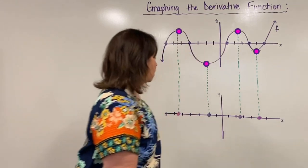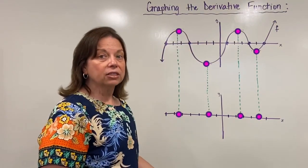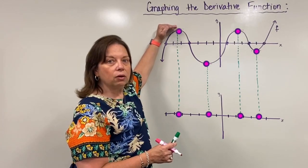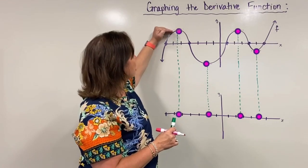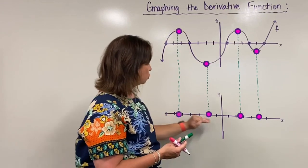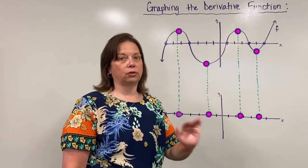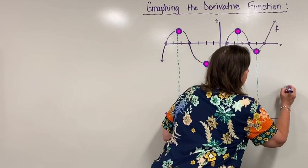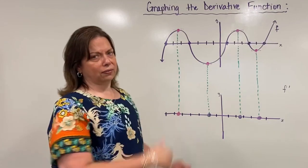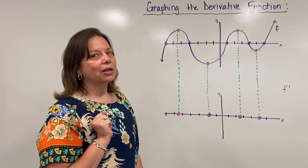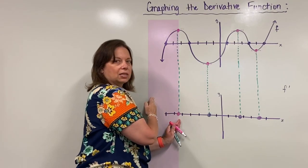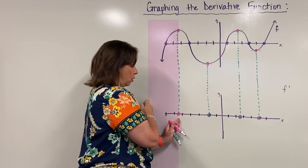Right away when I tackle these graphs, I glean from the original graph what places give me a horizontal tangent, because those are the places where the derivative is zero. The slope of the tangent line is zero, and I map those directly to the x-axis in my derivative graph. This is going to be our f-prime graph when we are done. Now I need to figure out what is happening on the left and right sides of each zero of my derivative function.